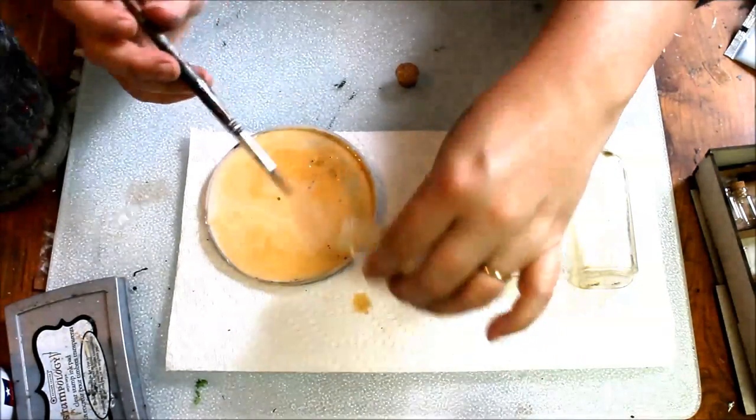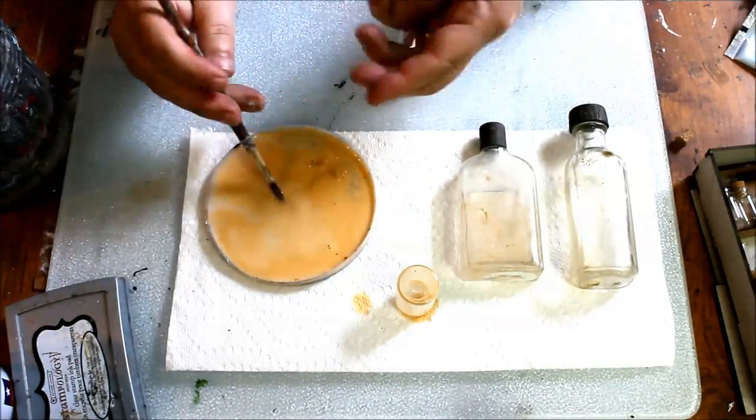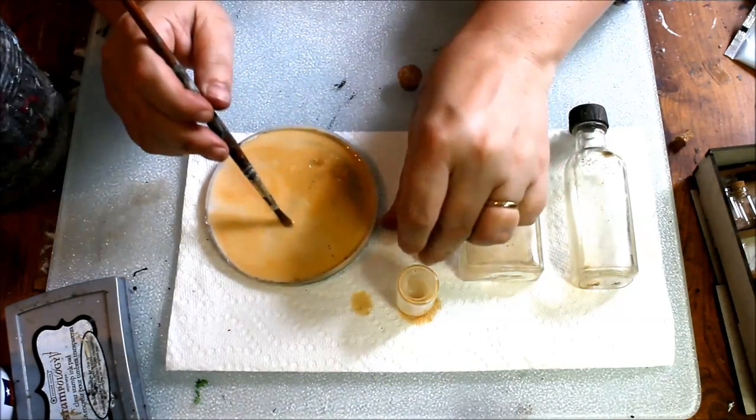Using a brush, coat the inside with your concoction. You want to dull the glass, giving a sense of age, adding grime to the crevices.